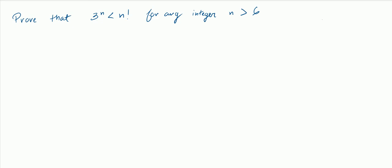In this proof by induction, I'll be trying to prove that 3 to the n is less than n factorial for any integer greater than 6. Another common use for proofs by induction is showing an inequality for a certain range of integers. They need to be integers because that's the scope of induction — it covers integers and not real numbers — but it's very common to see proofs by induction dealing with inequalities.